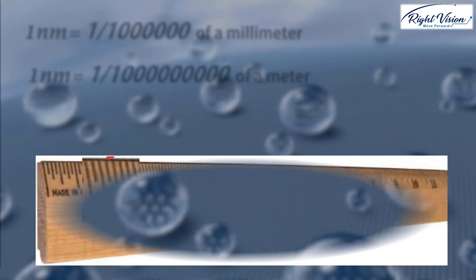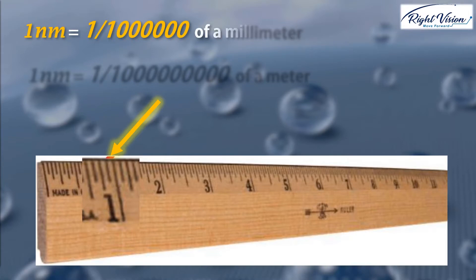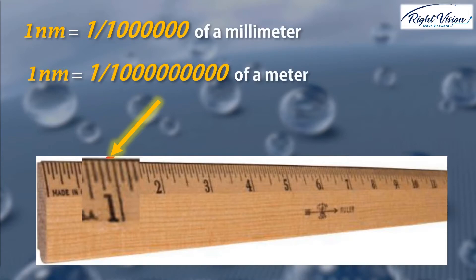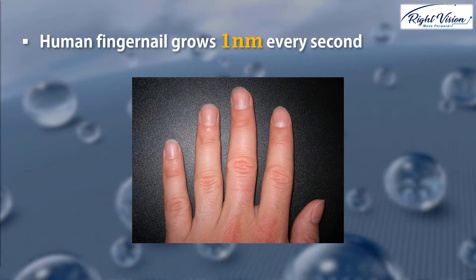Consider a ruler that you may have at your home. The smallest unit shown on a ruler is 1 millimeter. 1 nanometer is actually 1 million times smaller than the smallest unit that you can see on that ruler. Yes, 1 nanometer is 1 billionth of a meter. As a matter of fact, human fingernail grows 1 nanometer in every second.